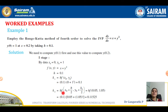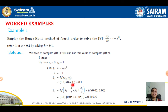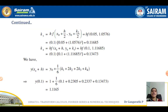Similarly, k₂ = h·f(x₀ + h/2, y₀ + k₁/2). With x₀ = 0 and h/2 = 0.05, x is replaced by x₀ + h/2, and y is replaced by y₀ + k₁/2 in the formula f(x, y) = x + y². Substituting the values for h and k₁ and evaluating, we get k₂ = 0.11525. For k₃, evaluate using the formula where x is replaced by x₀ + h/2 and y by y₀ + k₂/2, and on simplifying we get k₃ = 0.11685.